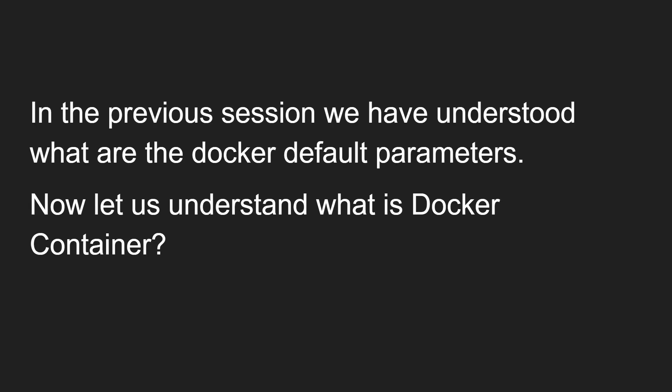In the previous session, we have understood what are the Docker default parameters and how we can check these Docker default parameters by using the command 'docker info'. If you type that command in your Ubuntu server, you will be able to see all the parameters and Docker-related information regarding the client and the server. We discussed about each one in our previous video.